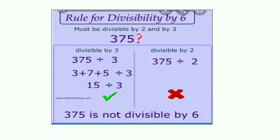Rule for divisibility by 6: the number must be divisible by both 2 and 3. Example: 375 — adding the digits: 3 plus 7 plus 5 is 15, which is divisible by 3, so 375 is divisible by 3. However, 375 is not an even number; it is odd, so it is not divisible by 2. Since it is divisible by 3 but not by 2, therefore 375 is not divisible by 6.